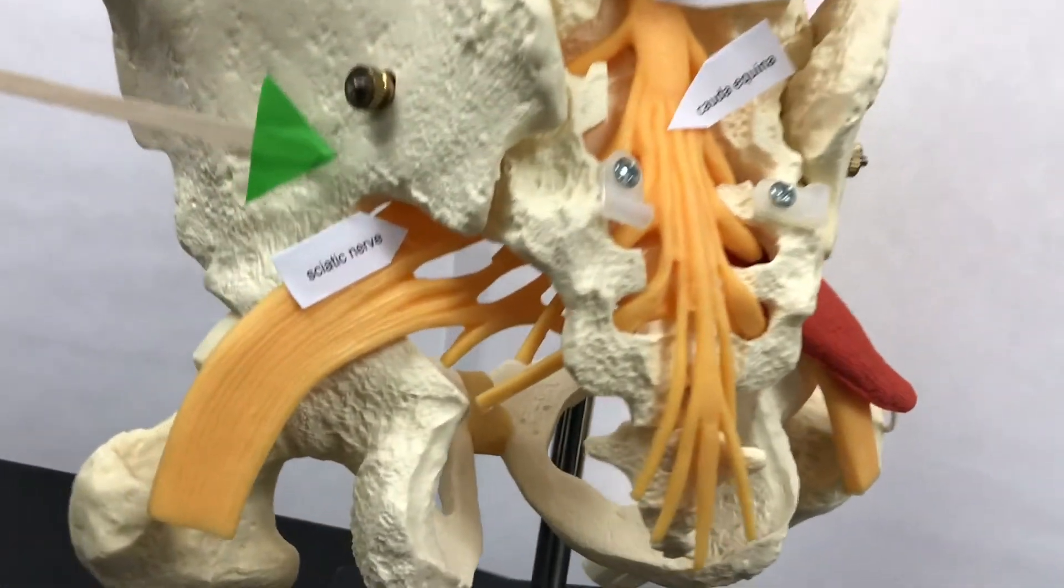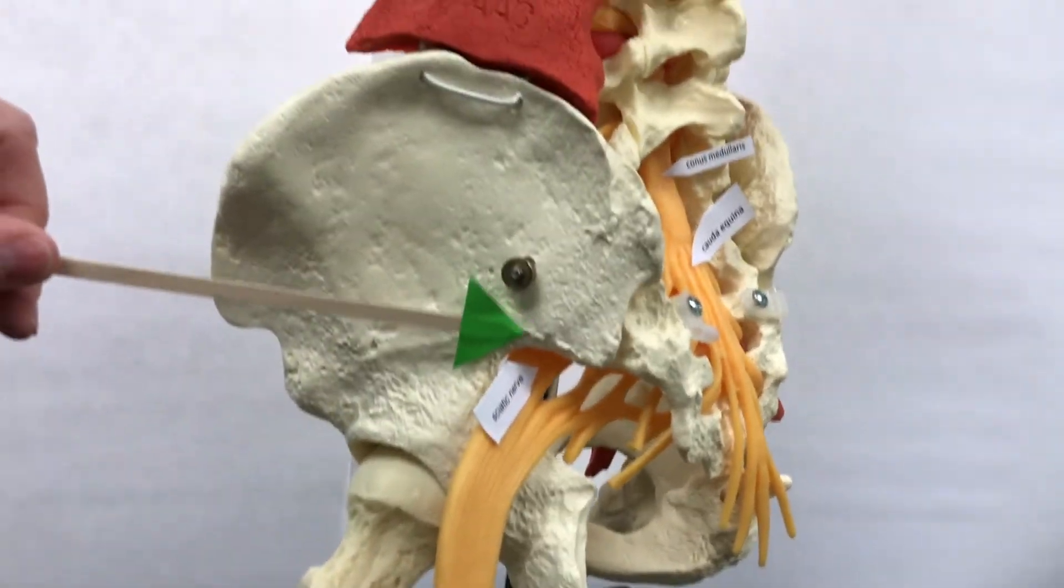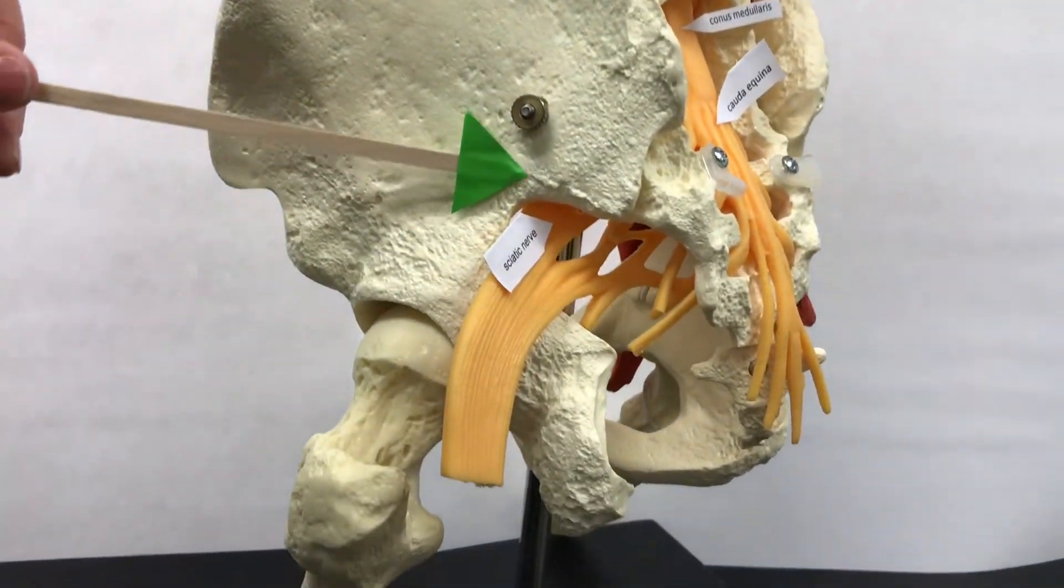This model shows the sciatic nerve going through the greater sciatic notch on the coxal bone.